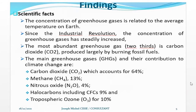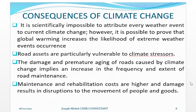Scientific facts: The concentration of greenhouse gases is related to the average temperature on Earth. Since the industrial revolution, the concentration of greenhouse gases has steadily increased. The most abundant greenhouse gas — two-thirds — is carbon dioxide (CO2), produced mainly by burning fossil fuels. The main GHGs and their contribution to climate change are: CO2 at 64 percent, methane (CH4) at 13 percent, nitrous oxide (N2O), low carbons including CFCs at 9 percent, and tropospheric ozone (O3) at 10 percent.